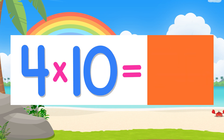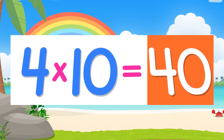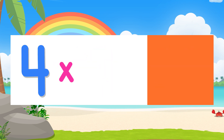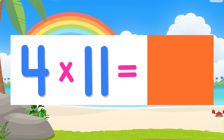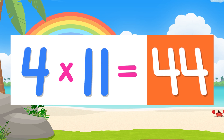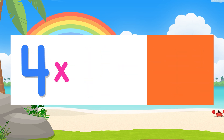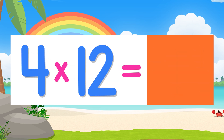Four times ten is forty. Four times eleven is forty-four. Four times twelve is forty-eight. Now all on your own.